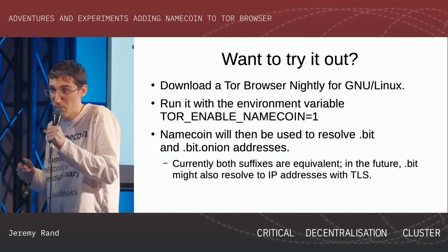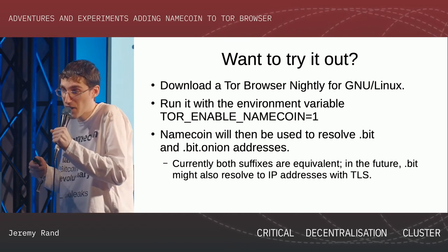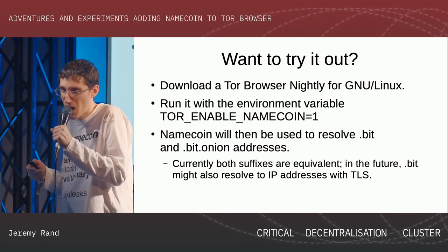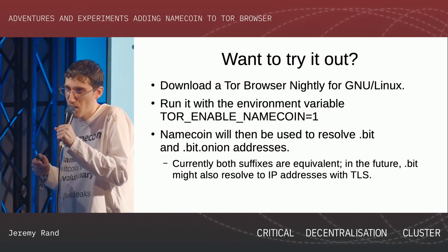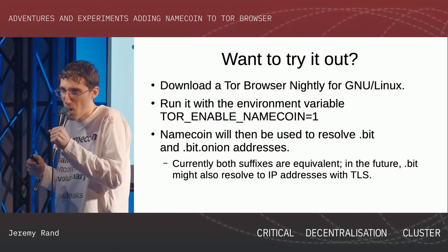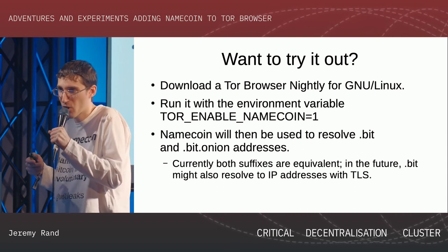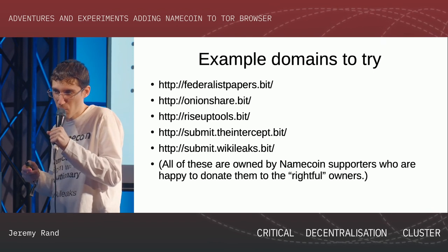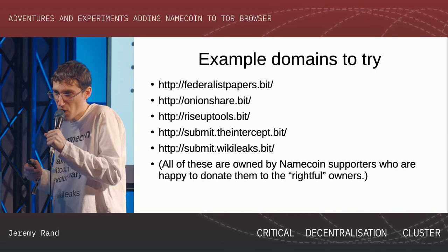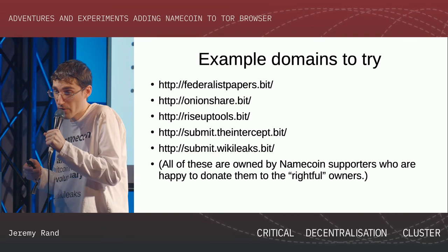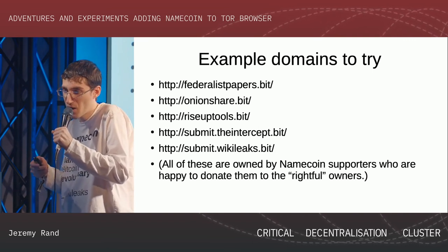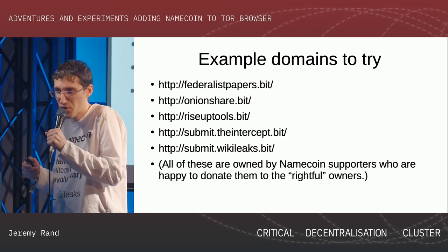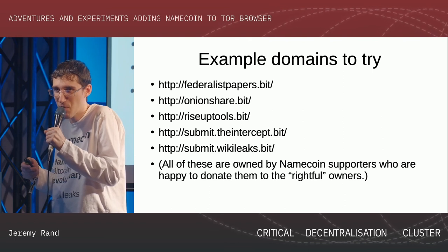If you want to try it out, download the latest Tor Browser Nightly for GNU Linux from the Tor website and run it with the environment variable TorEnableNamecoin equals 1. Namecoin will then be used to resolve .bit as well as .bit.onion addresses — both suffixes are the same right now, but in the future .bit might also point to IP addresses while .bit.onion will always be only .onion. Some example domain names you can try include Federalist Papers, OnionShare, RiseUp, and the submission systems for the Intercept and Wikileaks. These domains are owned by friendly Namecoin supporters who are happy to donate them to the rightful owners, but since they haven't been donated yet, please don't rely on them for your security.